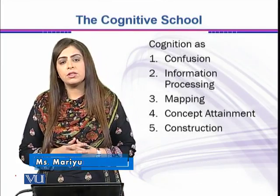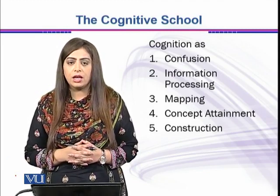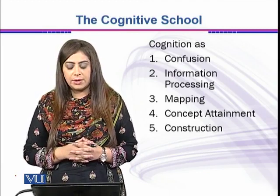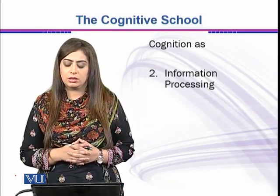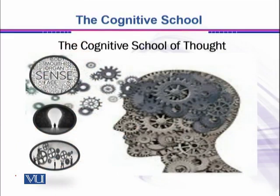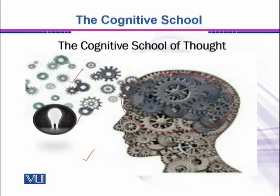Remember the first video in which I told you that cognition can be seen as confusion, information processing, mapping, concept attainment, and construction. In this video we will have an overview of cognition as information processing. Recall the picture in which I told you that cognition is a mental process highly influenced by experiences, thinking process, and senses. Here we will assume that cognition is influenced by the thinking process and see how it is used in cognition as information processing.